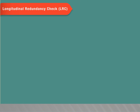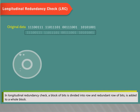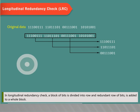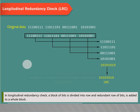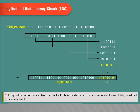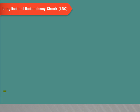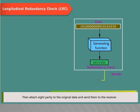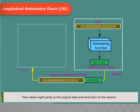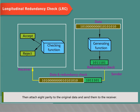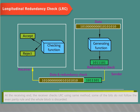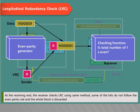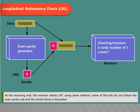Longitudinal redundancy check (LRC). In longitudinal redundancy check, a block of bits is divided into rows and a redundant row of bits is added to the whole block. Organize data into a table and create a parity for each column. Then attach 8 parity bits to the original data and send them to the receiver. At the receiving end, the receiver checks the LRC using the same method. If some bits do not follow the even parity rule, the whole block is discarded.